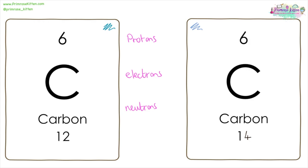Here we have two isotopes of carbon. You can see they have the same atomic number, six, but different mass numbers. Which means each of them is going to have six protons. They are each going to have six electrons.